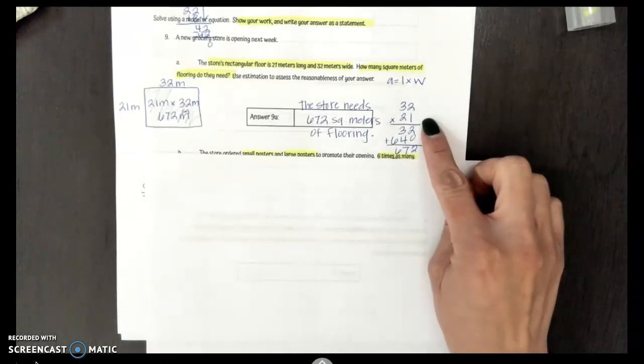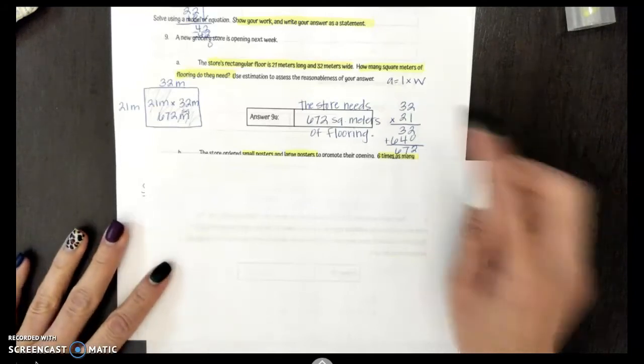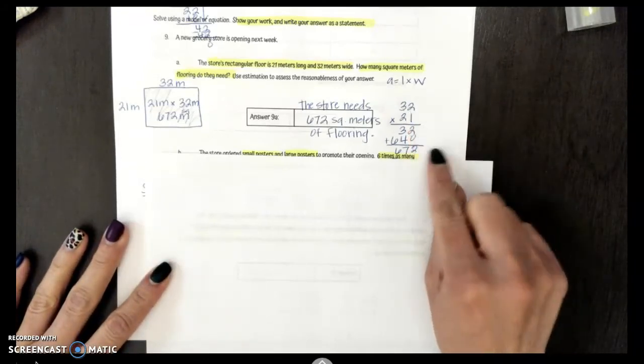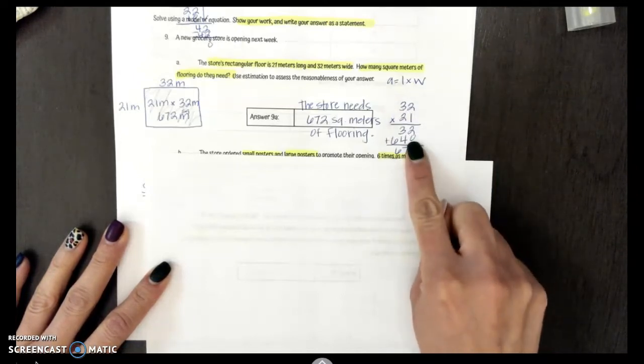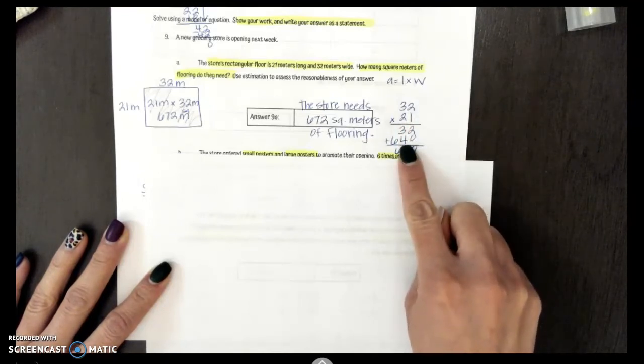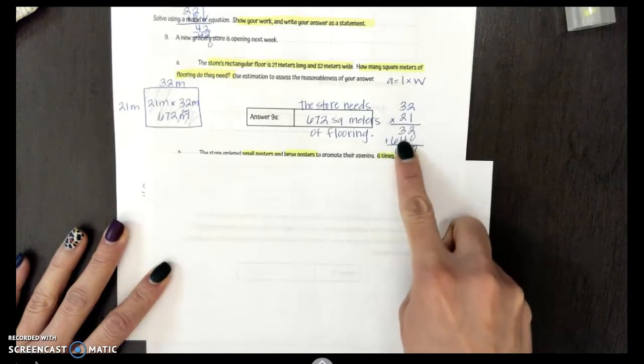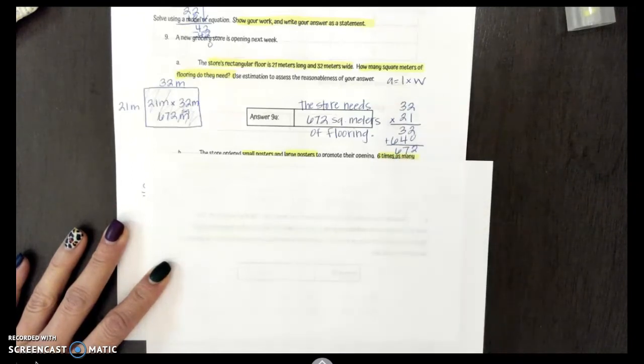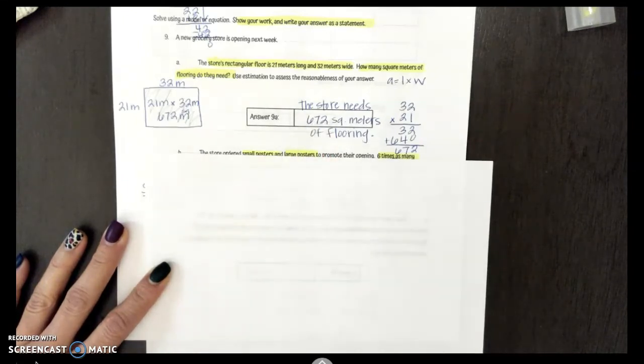I use the standard algorithm only because it's a little bit easier and saves me a little bit of time. So 1 times 2 gives me my 2 and 1 times 3 gives me 3. I add my 0 as my placeholder. 2 times 2 is 4 and then 2 times 3 is 6. Add both of my partial products together and I get 672. Be sure you're listing your answer as a statement. So the store needs 672 square meters of flooring.